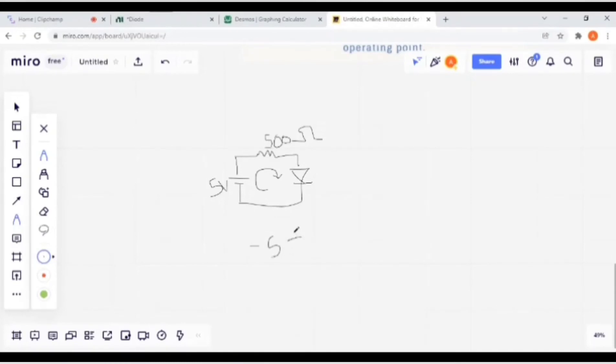Write KVL equation: minus 5 volt plus I times voltage drop across 500 ohm resistor. This is the voltage drop across 500 ohm resistor, plus VD, the drop across the diode.